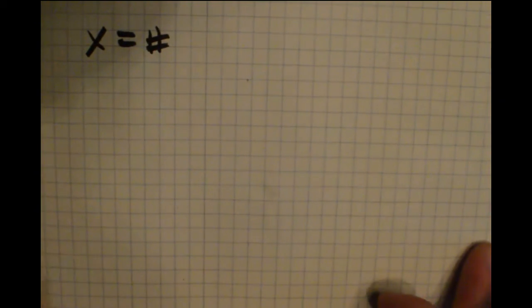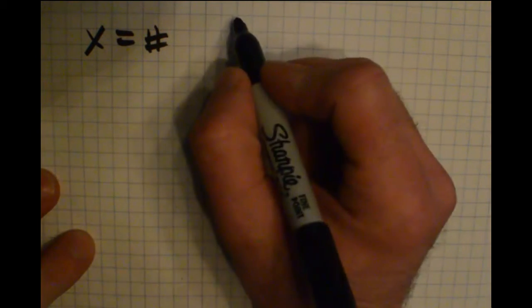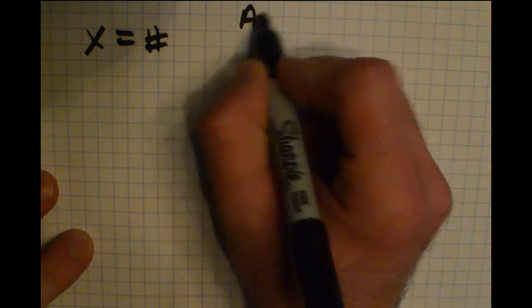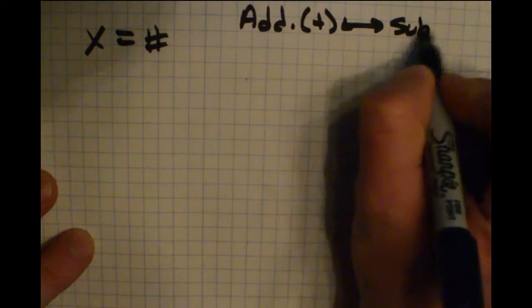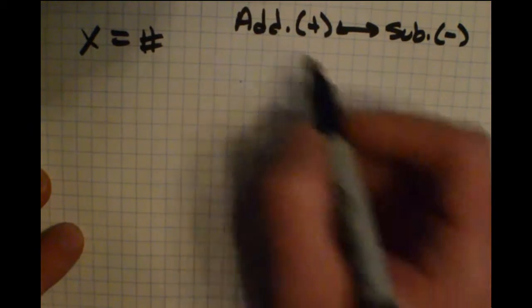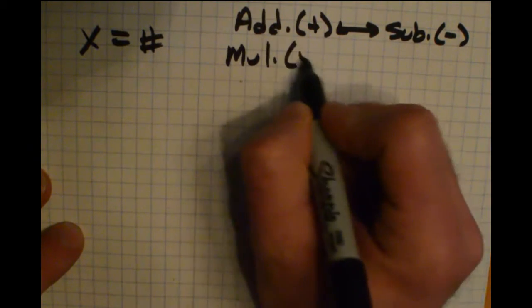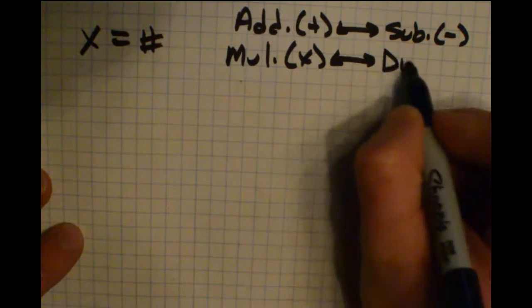So to be able to do that, we need to know something about inverse operations. So the inverse of, let's say, addition would be subtraction. If we had multiplication, the inverse to that, that would cancel it out, would be division.